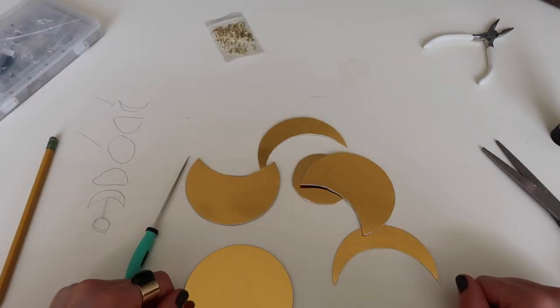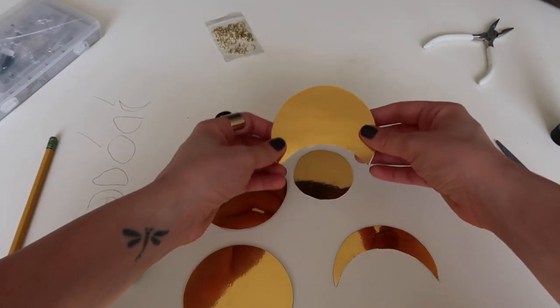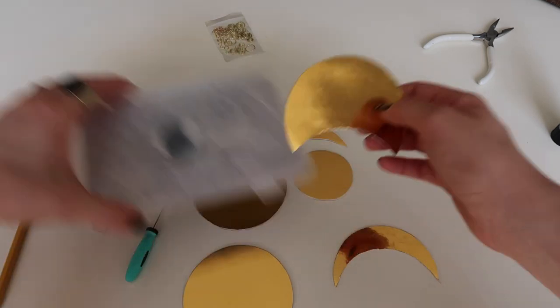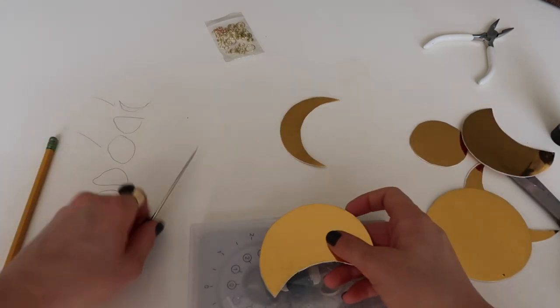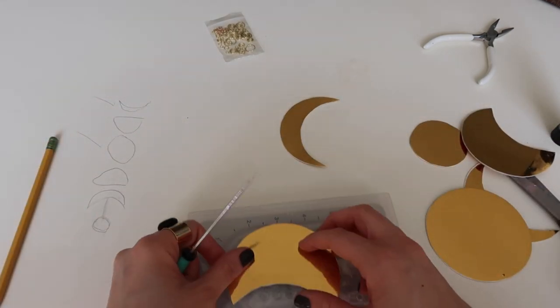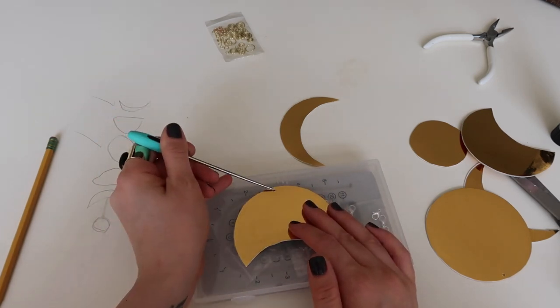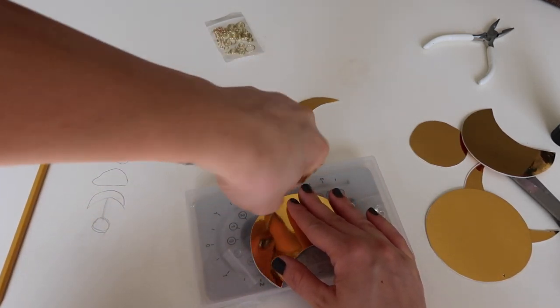Okay guys, after gluing our pieces together, what we need to do is make little holes for our jump rings on both sides of each moon. For that we're gonna need our little spiky tool here. I don't measure anything, I do it by eye. It's not a big deal, even if it's a little crooked, it's actually even prettier.